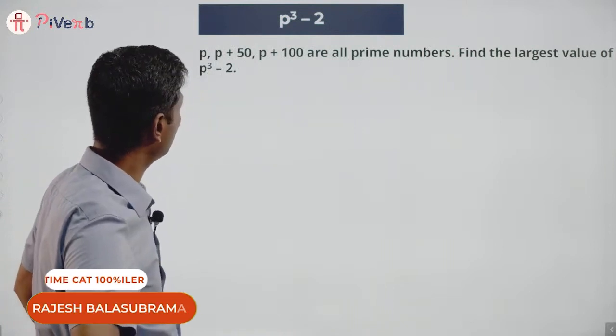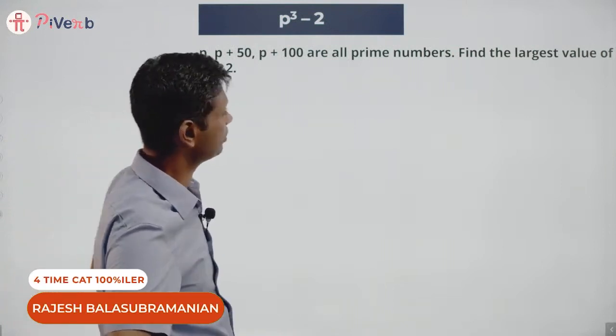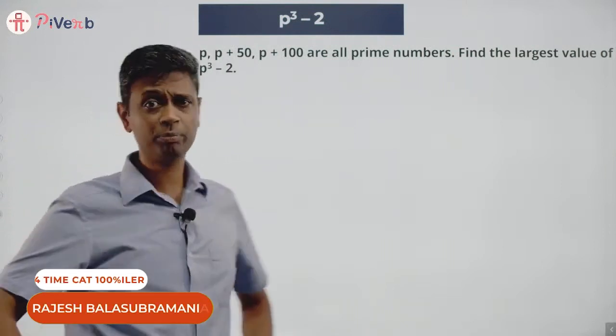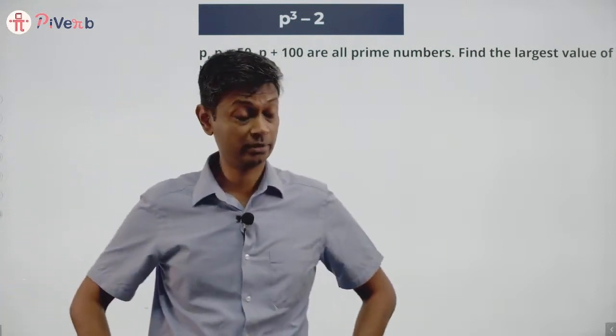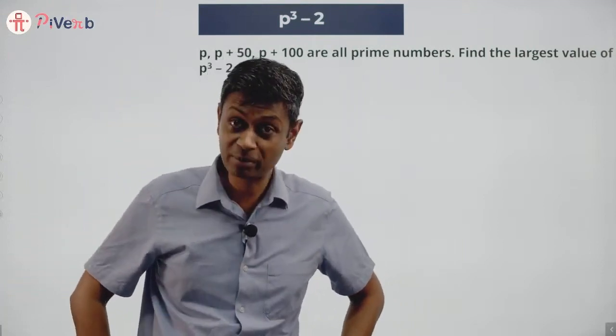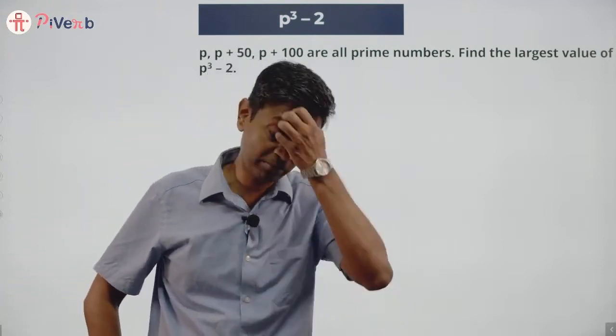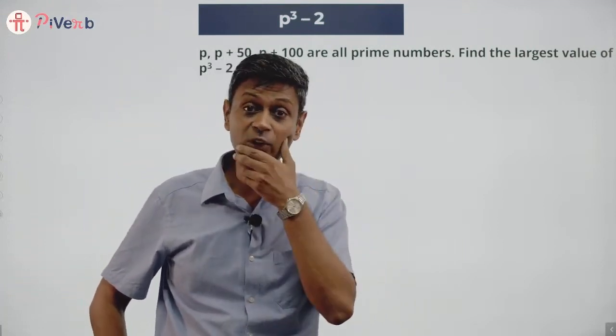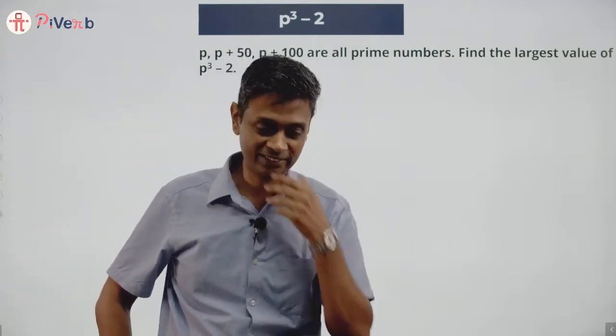p, p plus 50, p plus 100 are all prime numbers. Find the largest value of p cubed minus 2.